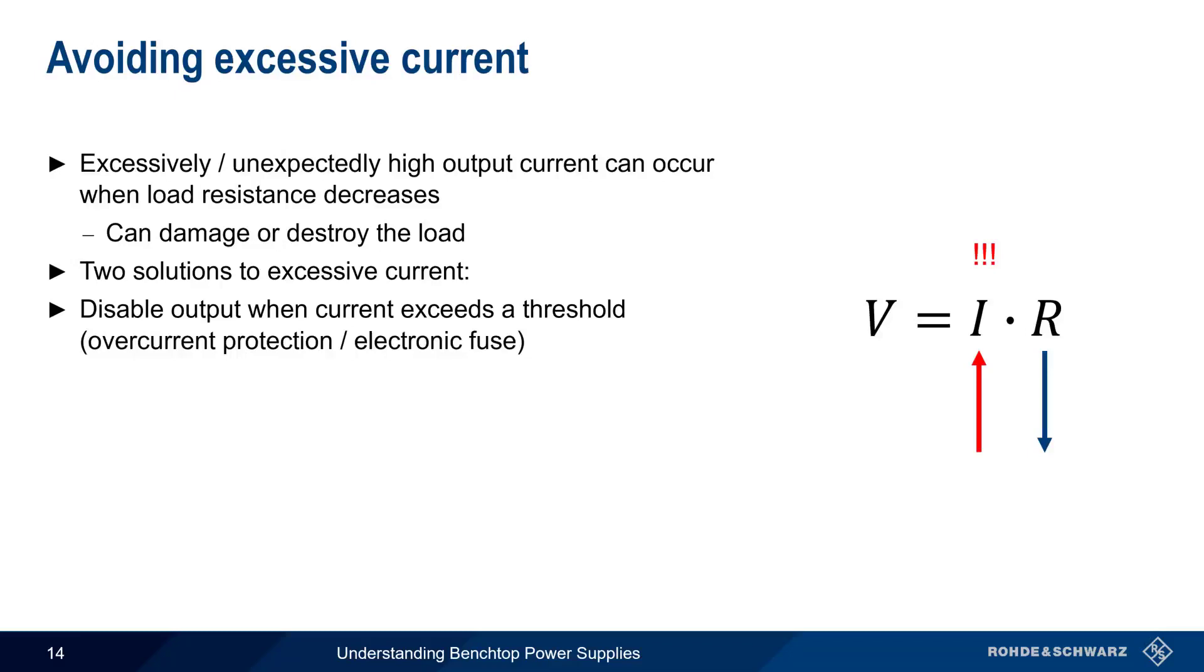Although turning off the output does protect the load, completely shutting off the power is sometimes undesirable. Another way to avoid the problem of excessive current is to reduce the voltage, such that the current falls below the threshold. And this mode of operation is called constant current mode.